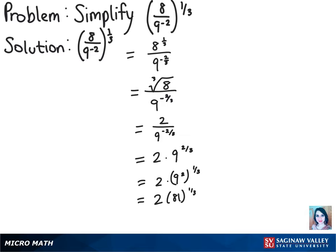And we know that 1/3 means the cubed root, so then we have 2 times the cubed root of 81.